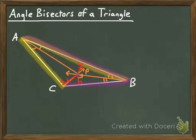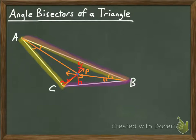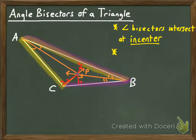Some facts you need to know regarding the concurrency of the angle bisectors of a triangle: one of those things is what the point of concurrency is called. Remember that where the perpendicular bisectors intersected it was called the circumcenter. Well, it turns out the point where the angle bisectors of a triangle intersect is called the incenter of the triangle, and the incenter is equidistant from each of the three sides of the triangle.